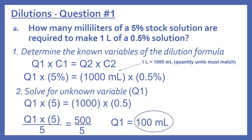Now we'll look at some example questions about dilutions. Question number one, part A: How many milliliters of a 5% stock solution are required to make one liter of a 0.5% solution? First, we determine the known variables of the dilution formula: Q1 times C1 equals Q2 times C2. Q1 is what we're looking for. The concentration associated with it is 5%.